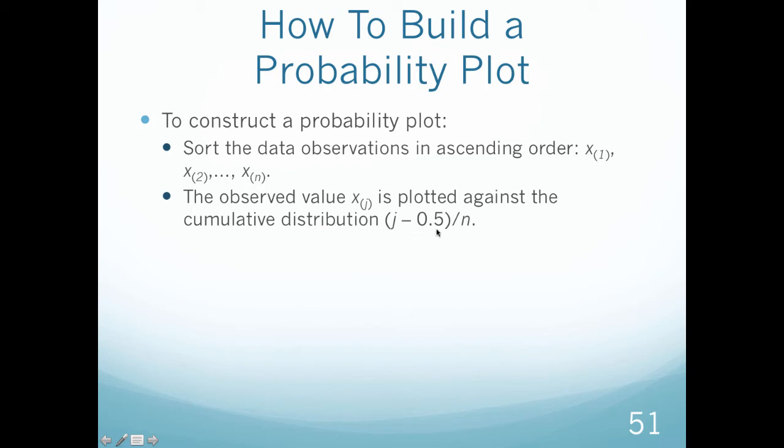So each value, j minus 0.5 divided by n, where n is the amount of values I have, and j then is just like its placeholder. So if it's value number 1, j is 1. Value number 2, j is 2.